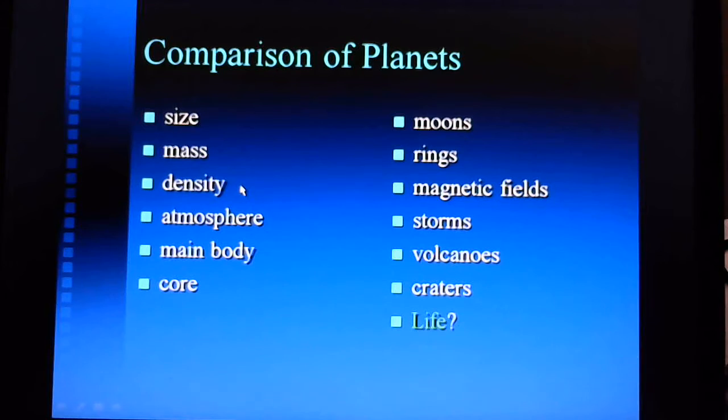But when you take those rocky planets and stuff all of that rock into a smaller volume, you get a higher density. So the terrestrial planets have the higher densities of the planets in our solar system and the gas giants have the lowest densities.